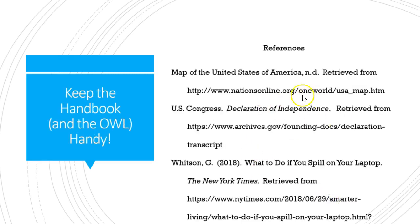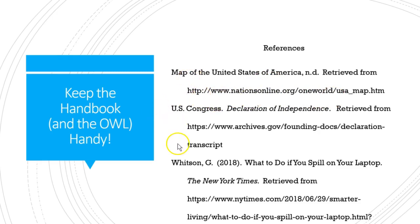Here is a reference list of the sources used in this paper. Keep the handbook and the Purdue OWL handy — I had to look up these formats. For example, noting that the US Congress wrote the Declaration of Independence was a tricky one, retrieved from the US government archives. There was also a map of the United States retrieved from another site. Notice how the second and subsequent lines of each source are indented, and sources are listed in alphabetical order on the references page. This is an example of what a references page looks like, even in a PowerPoint presentation. I hope you all have a great week, and I'm looking forward to reading your papers. Thank you, bye-bye.